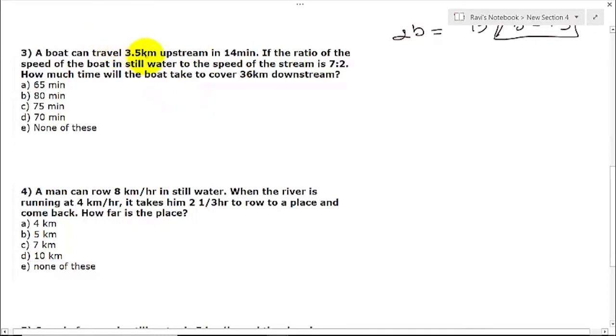Let us go to question number three. A boat can travel 3.5 km upstream in 14 minutes. If the ratio of the speed of the boat in still water to the speed of the stream is given, how much time will the boat take to cover 36 km downstream? If you see the answer is in minutes, so don't convert this into seconds or hours. Let us solve this problem. Upstream: boat minus water, distance is 3.5 divided by 14.